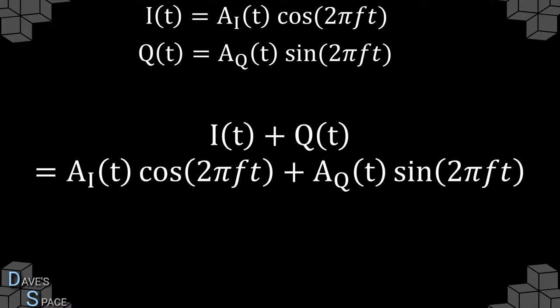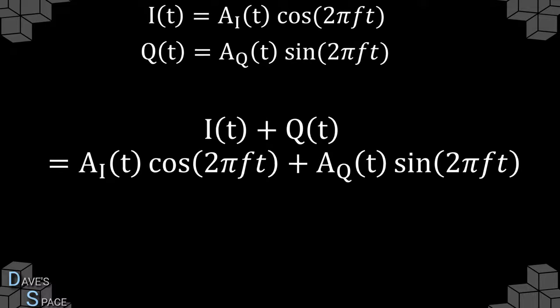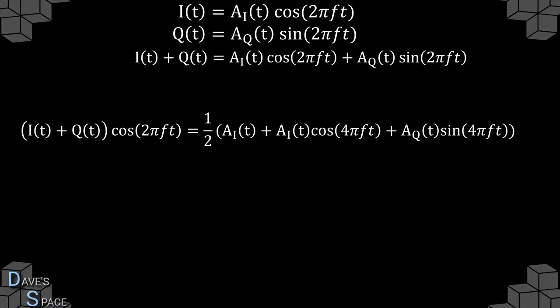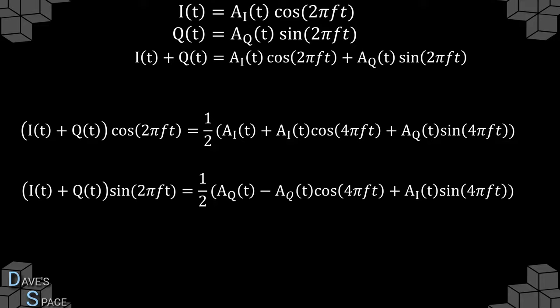If we then add those two signals together, we get something very simple — just the addition of the two. The trick with these quadrature signals is to realize that if we multiply the summation of the two quadrature signals by cosine 2πft, what we end up with is a constant expression A_i(t) — the original modulation waveform of the cosine component — multiplied by some high frequency oscillations at twice the original carrier frequency. Likewise, if we multiply the same i+q(t) by sine of 2πft, we end up with a constant A_q(t) — our original modulation waveform for the sine component q(t) — with some more high frequency oscillations.